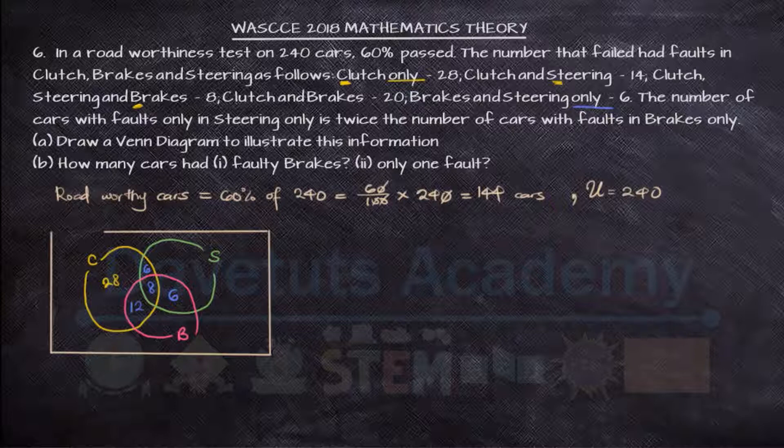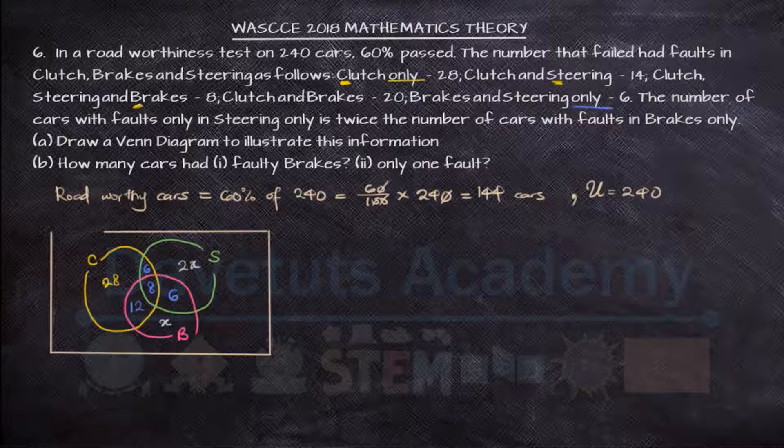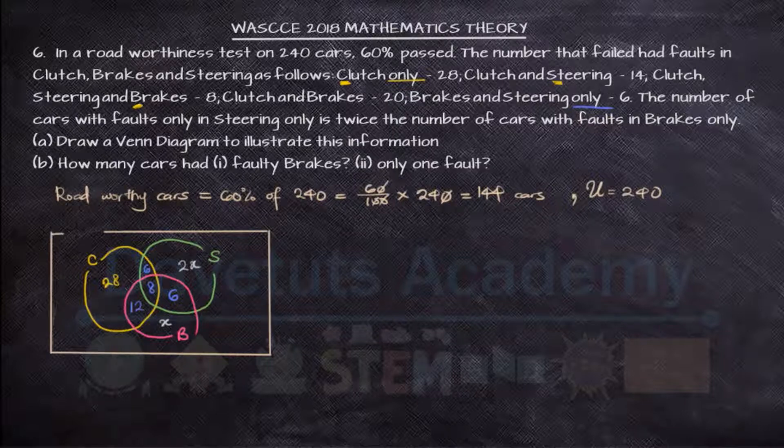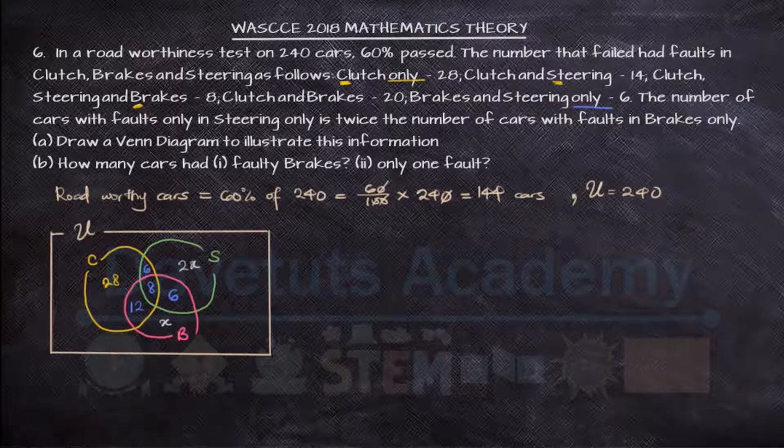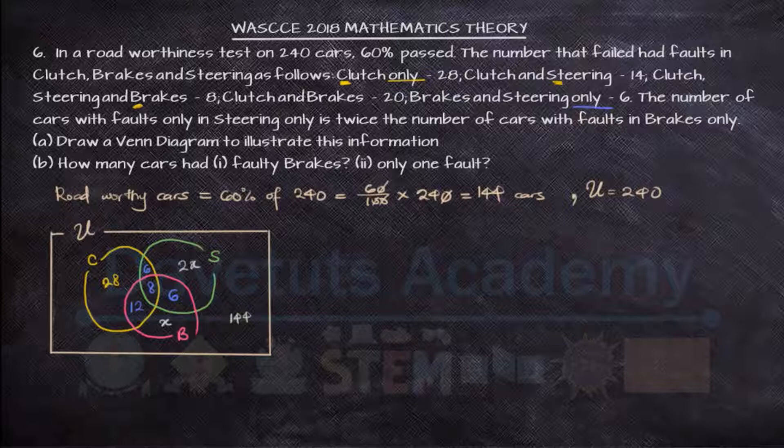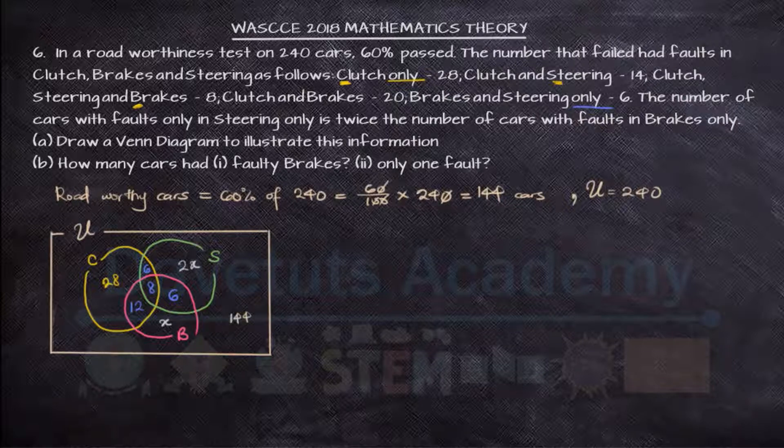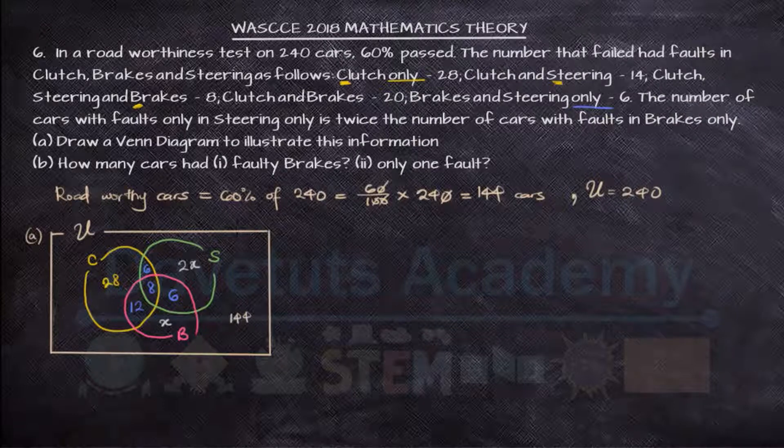Then now the number of cars with faults only in steering is twice the number of cars with faults in brake only. So if brake only is x, steering only is 2x. And then 144 cars we have noticed to be roadworthy. They are not faulty. So that will be outside the circles. So just like that we have our Venn diagram for this information that we are presented with.